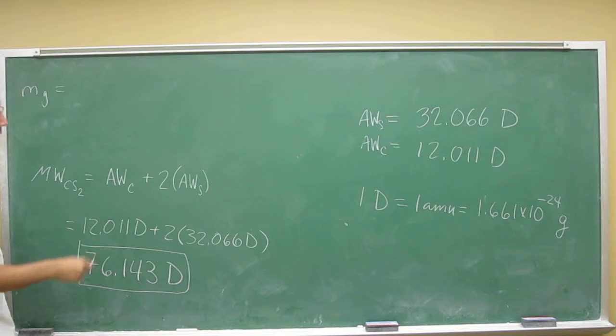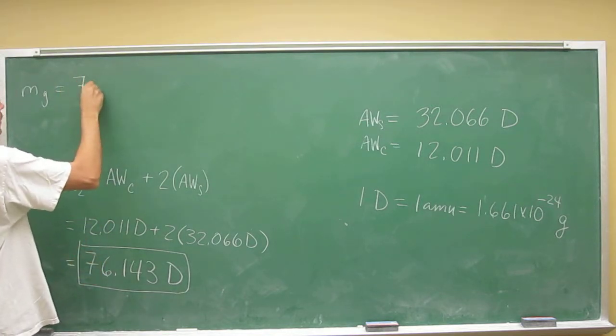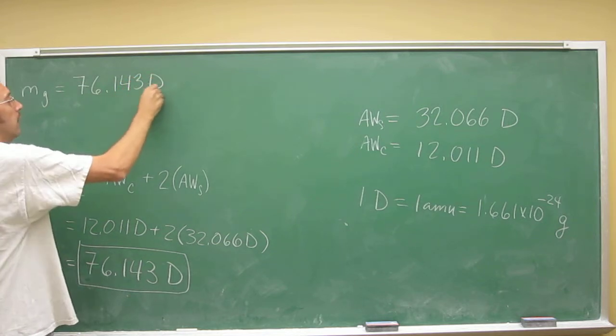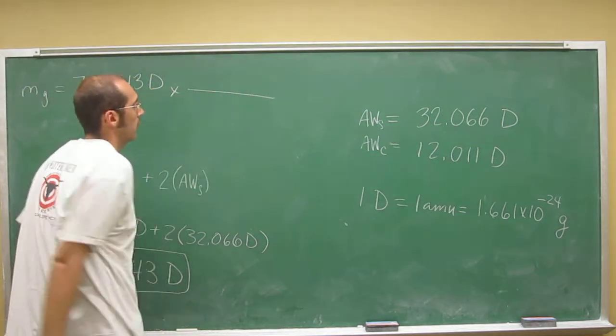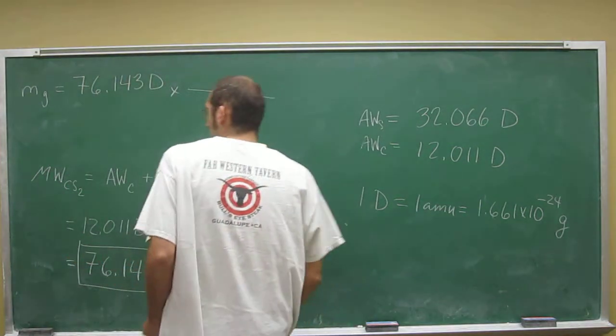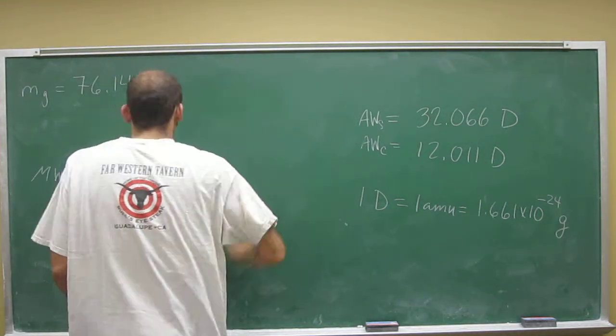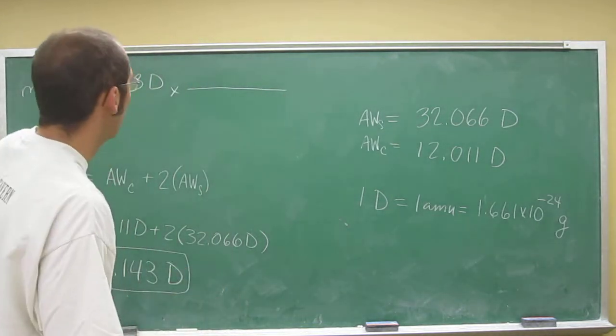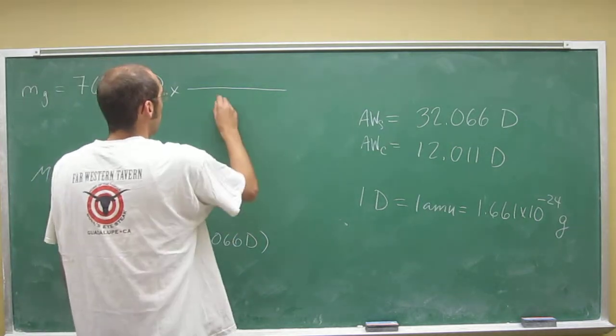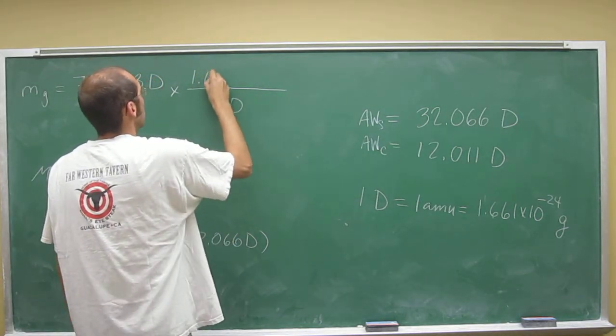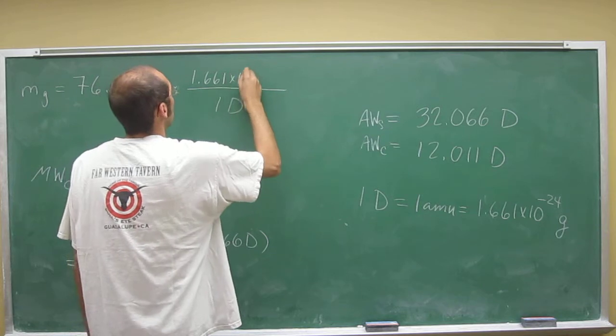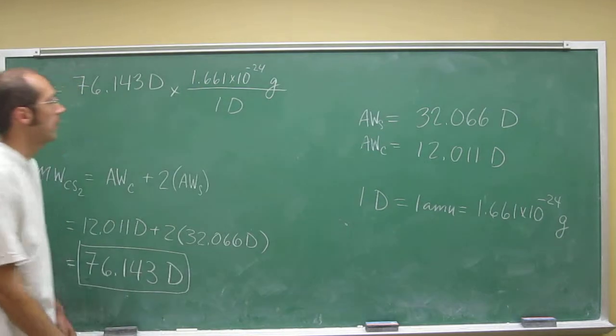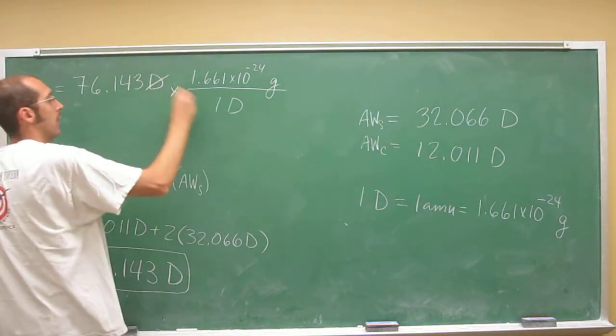So that's going to equal 76.143 Daltons. And then you just do your conversion factor, like sliding downhill there. Try to keep it even. So one Dalton equals 1.661 times 10 to the negative 24th grams, of course. And that's going to cancel.